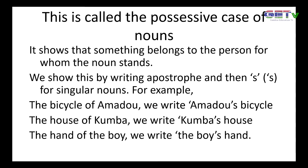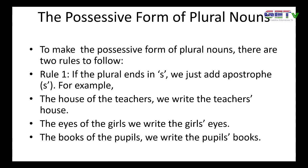For example, the bicycle of Amadou — one bicycle belonging to Amadou. It means the bicycle belongs to Amadou. We write Amadou, then apostrophe, that symbol on top, and then S, then bicycle — showing that the bicycle belongs to Amadou. The house of Kumba — we say Kumba's house. The hand of the boy — we write the boy's hand.